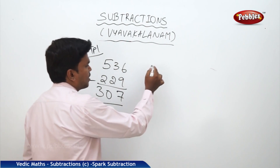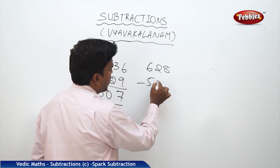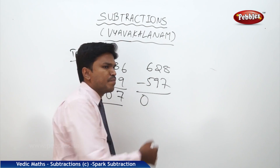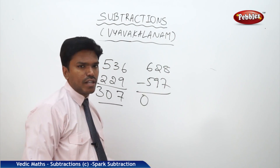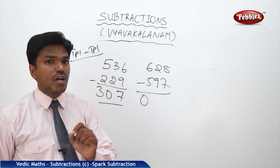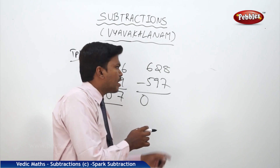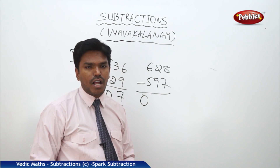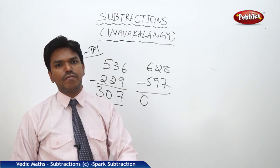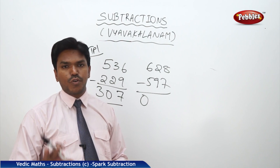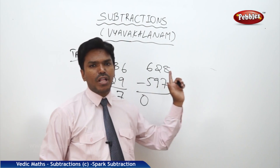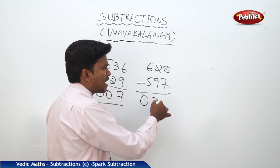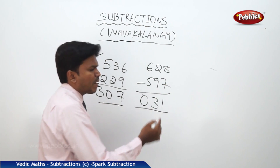Now suppose 628 minus 597. 6 minus 5 is 1. But mismatch — so 0. Now for the mismatch: 2 plus the complement of 9, which is 1. So 2 plus 1 is 3. But next number is match, so 3 only. For match numbers I won't use complement — just subtract directly. 8 minus 7 is 1. So my answer is 31.